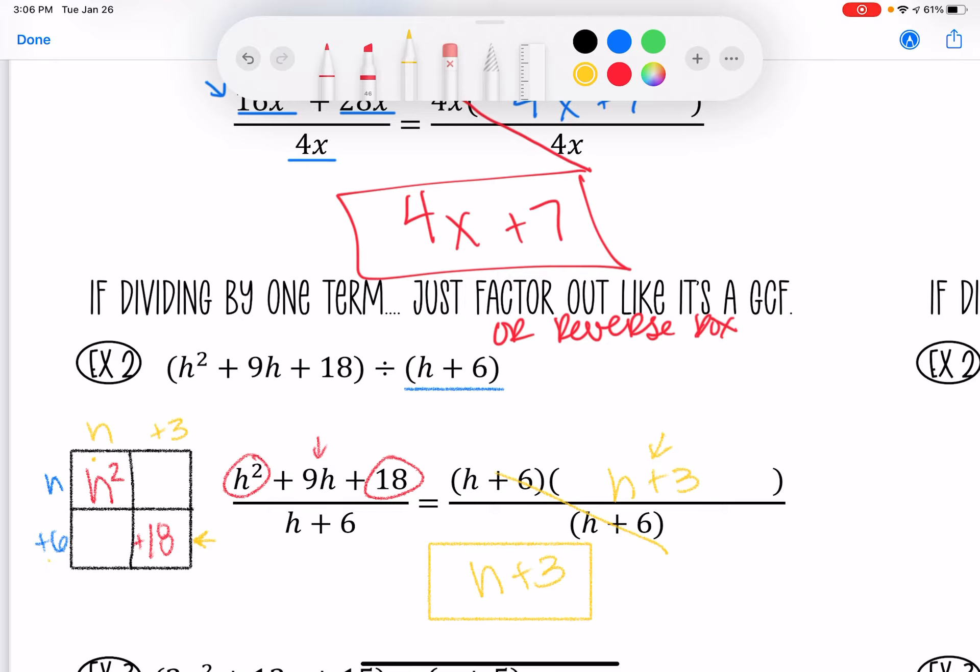Now, with the reverse box method, notice it's so much easier if I have been given one term or one of the factors in order for this to work. And if you were double-checking your answer because you were like, Ms. Samji, I don't think this works. Well, think about it. h times 6 gets you plus 6h. h times 3 gets you 3h. 6 plus 3h gets you that 9h. That is your OI term. That's how easy that was.